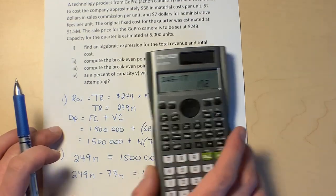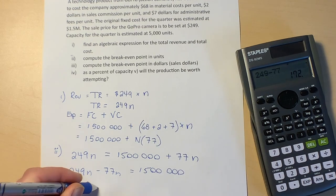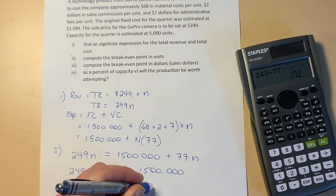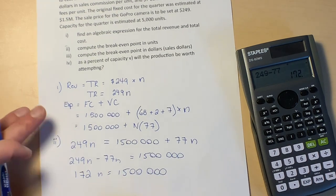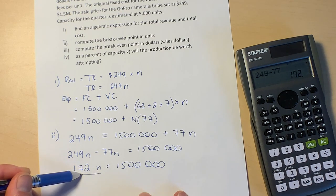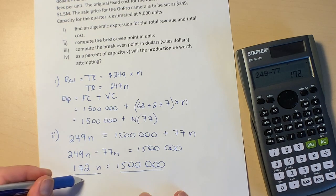I get 172, so 172n equals 1.5 million dollars. And now finally we'll divide both sides by the number in front of n, so we'll divide both sides by 172.